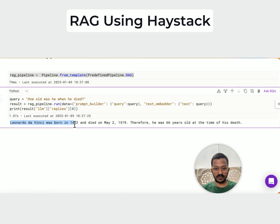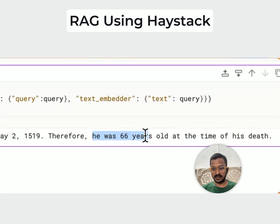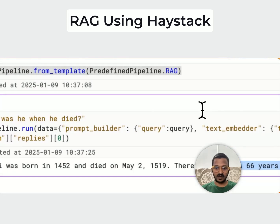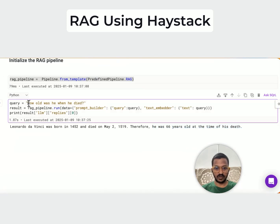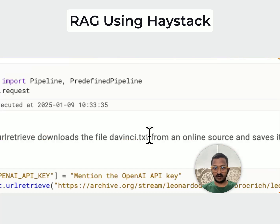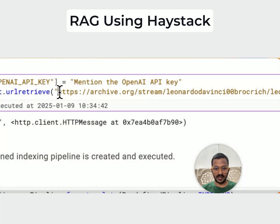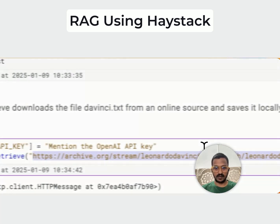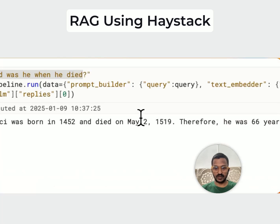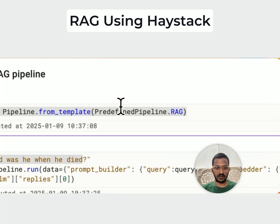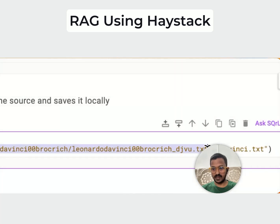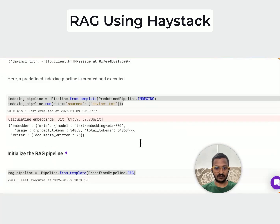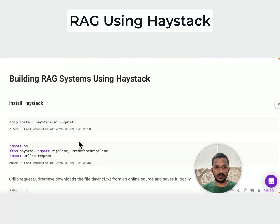The response is: 'Leonardo DaVinci was born in 1452 and died on May 2nd, 1519. Therefore, he was 66 years old at the time of his death.' So we basically retrieved a proper chunk for our query from the document we saved locally, and got a contextually relevant response back. You can try this out with your own document, ask a query against it, and see how you can use Haystack in your RAG applications.